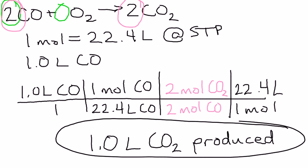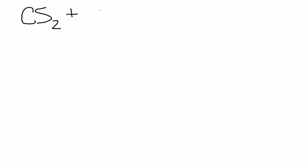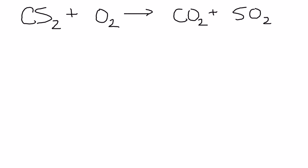I'm going to go ahead and erase the board and move on to number 3 now. Number 3 asks us, if liquid carbon disulfide, or CS2, reacts with 450 milliliters of oxygen to produce the gases carbon dioxide and sulfur dioxide, what volume of each product is produced? This is one of those wade-through-the-words stoichiometry problems. Liquid carbon disulfide — that's CS2 — plus O2 to produce carbon dioxide and sulfur dioxide.